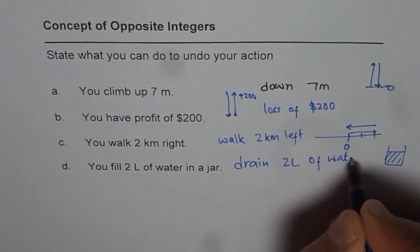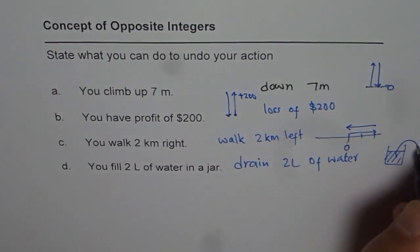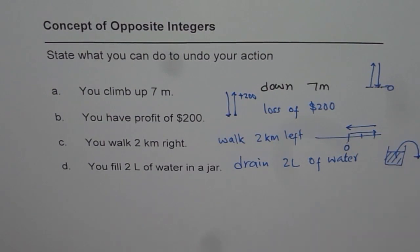That means you drain 2 liters of water. So once you drain 2 liters of water out of this jar, there won't be anything in it. No water. That is what you do to undo your action.